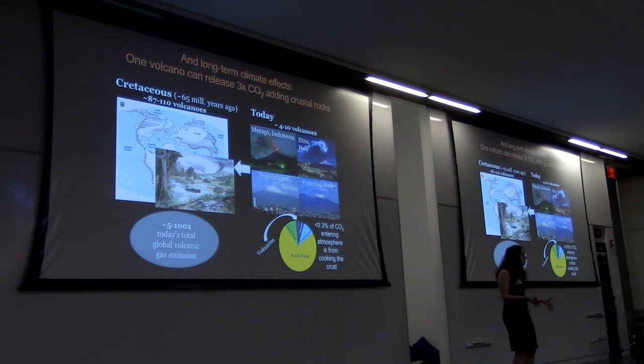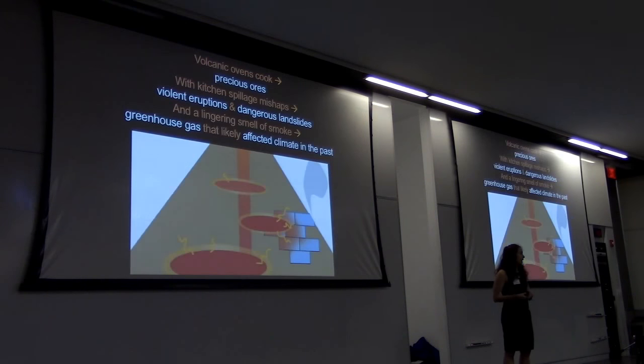This is important to look this far back in Earth's history, because if we can understand the natural processes that affected climate, we can better calibrate our climate models and anticipate what might happen in the future.